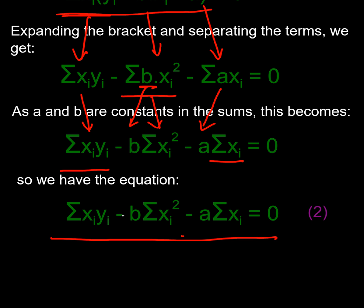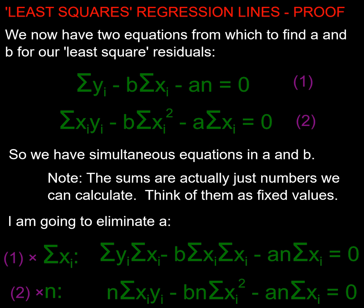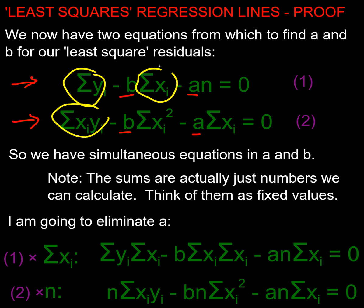So I've got two simultaneous equations — functions of a and b. There's a b and an a in each. They're linear, so we know how to solve them. The sigmas are just values I can compute from my data — they're just sums. I'm going to leave those values in and use elimination to solve, eliminating a first to find b.